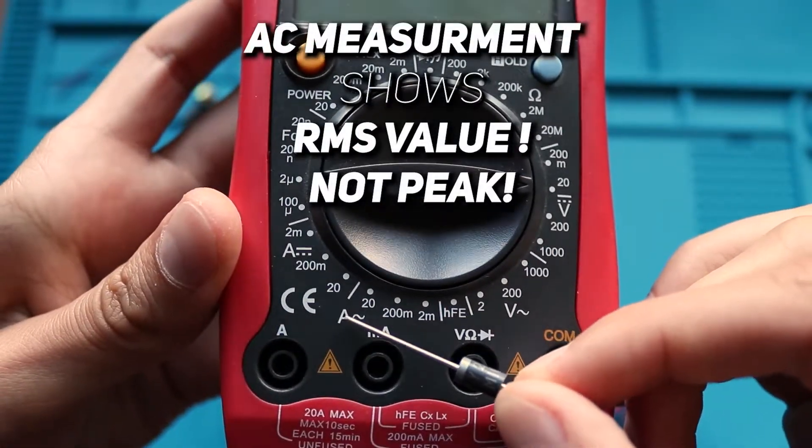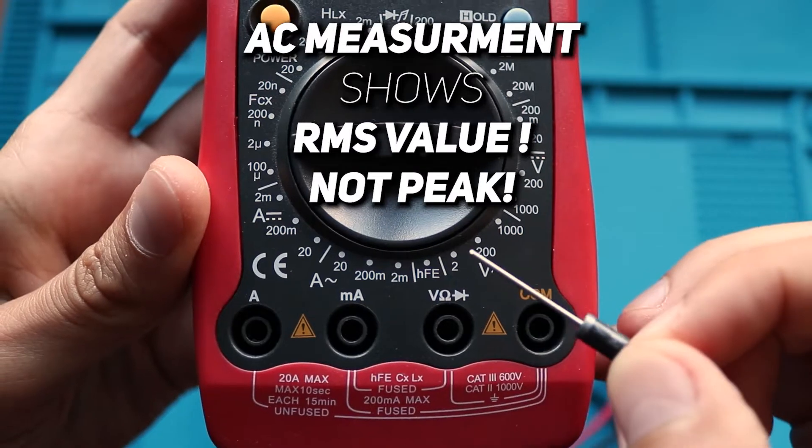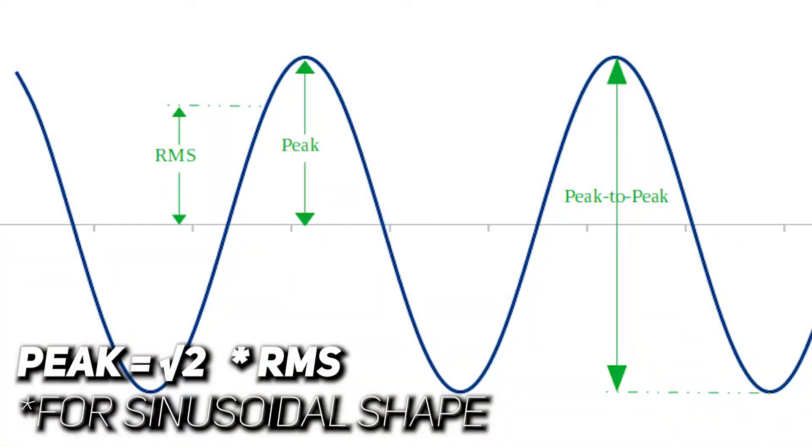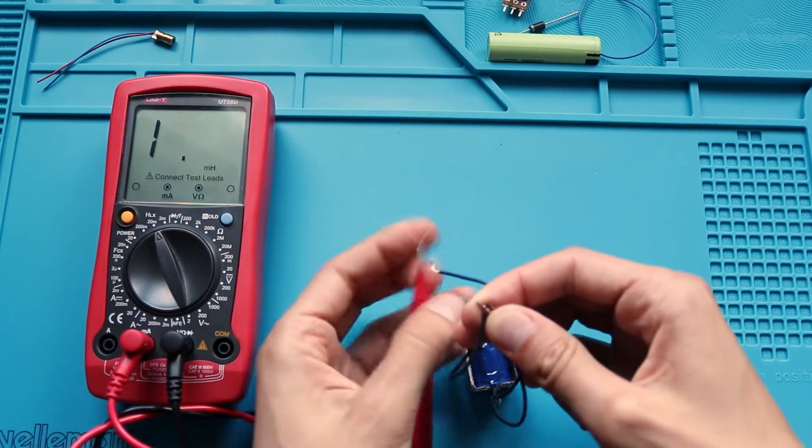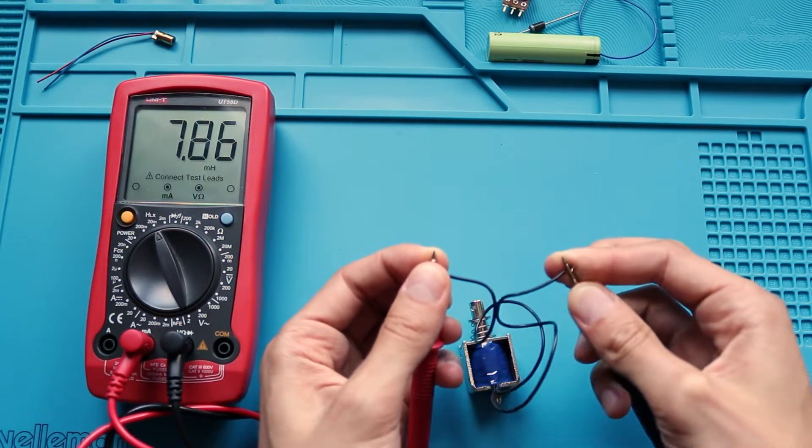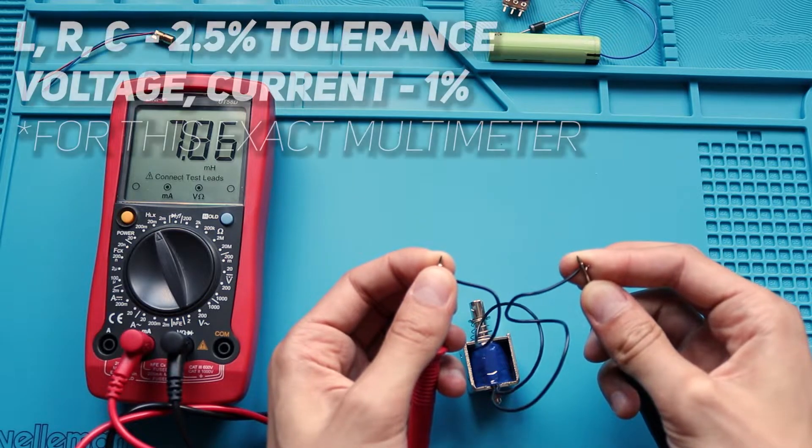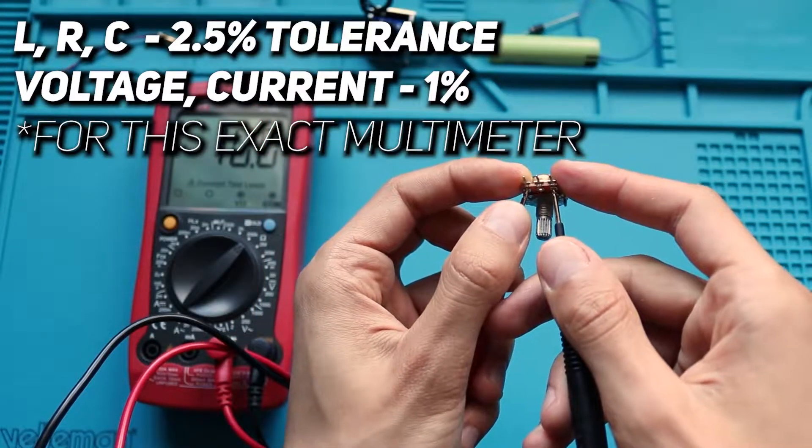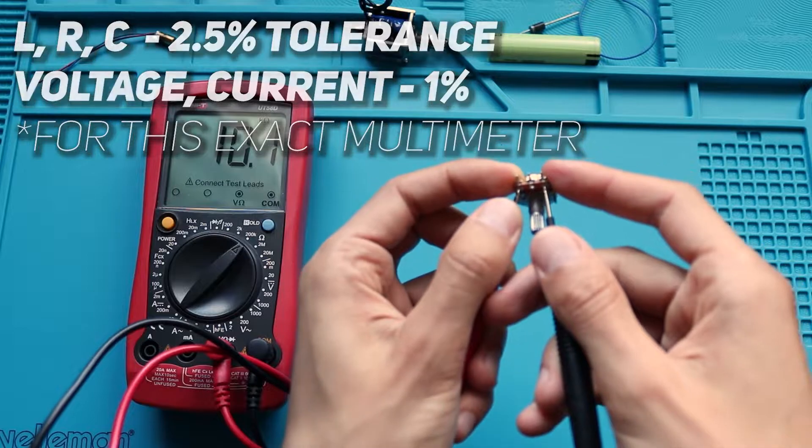What is extremely important is that in case of AC current and AC voltage, the multimeter will show you the root mean square value, not a peak value, so be aware of that. Also you must always remember that measurement is proceeded with some tolerance. That's around 1% for voltage levels and 2.5% for capacitance and inductance. So in reality you measure values with some error.